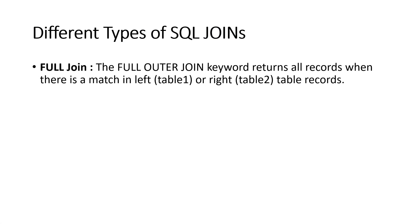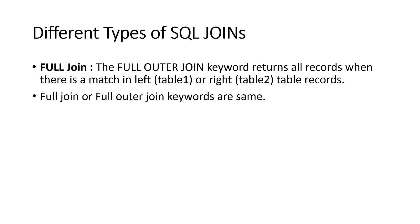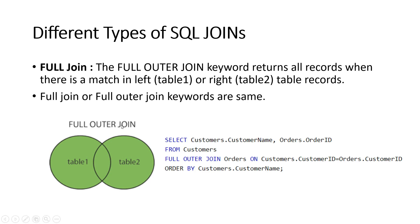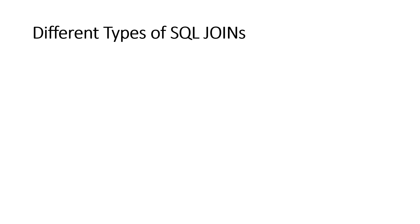The next SQL join is FULL JOIN — also called FULL OUTER JOIN. This keyword returns all records where there is a match in either the left or right table. FULL JOIN and FULL OUTER JOIN keywords are the same. FULL JOIN returns all the data from both table one and table two, including matched rows. The SQL query is: SELECT from customers FULL OUTER JOIN orders on customer ID, ORDER BY customer name.